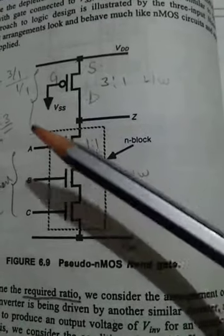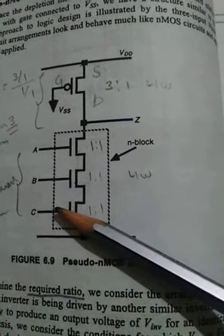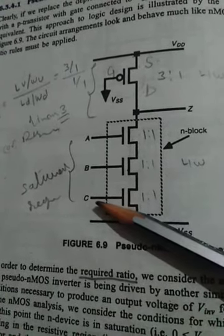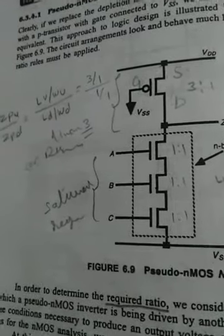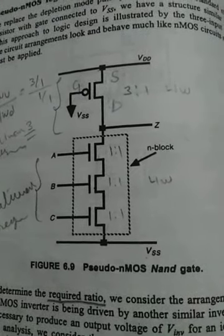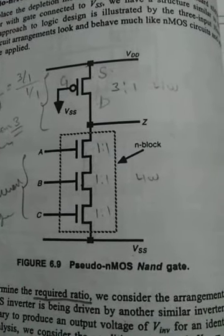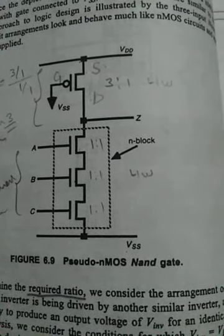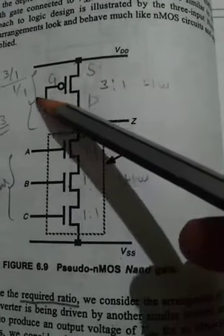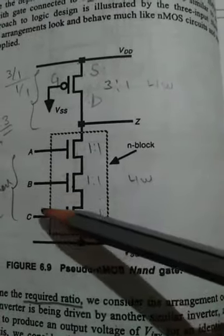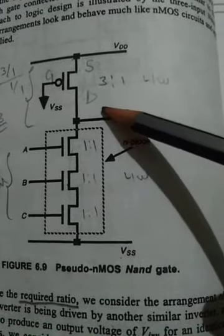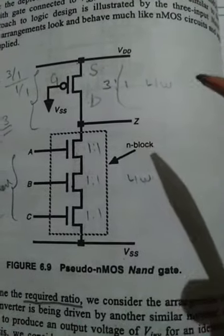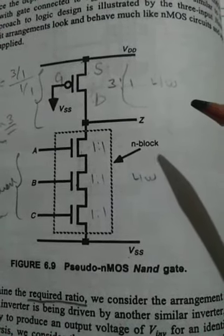When all the inputs are zero, the PMOS will be ON — because PMOS is strong in zeros and weak in ones. So when all inputs are zero, the PMOS turns on and the output is pulled up to VDD. When the input is low, the output is pulled up to VDD. With other data, the PMOS acts as a current source operating in saturation, and the output is determined by the resistance and current of the pull-down network.